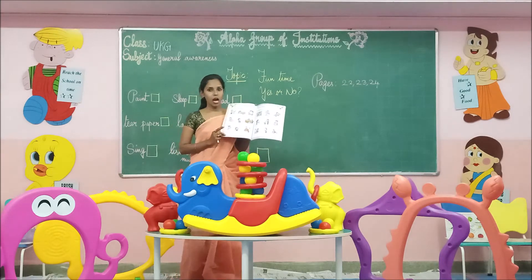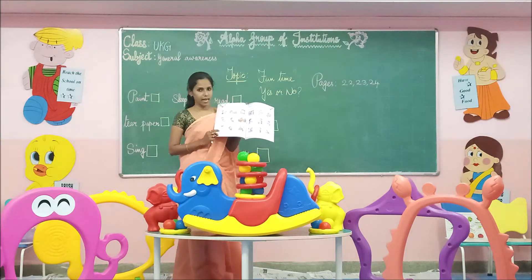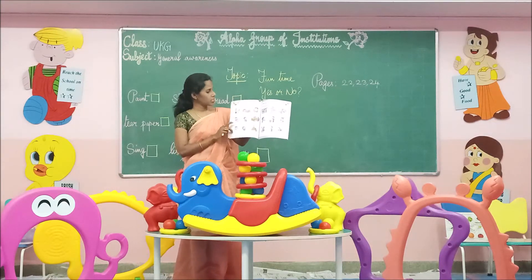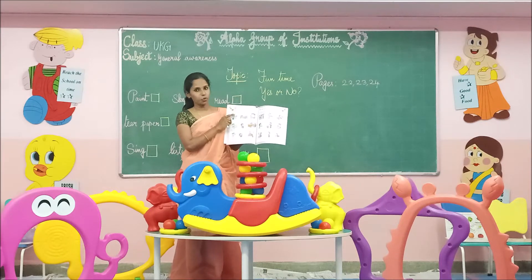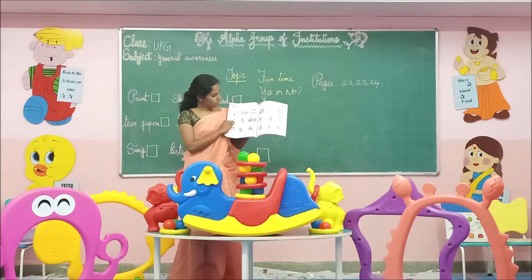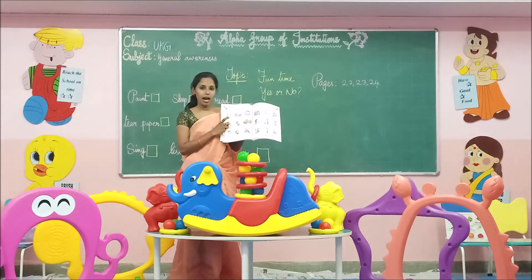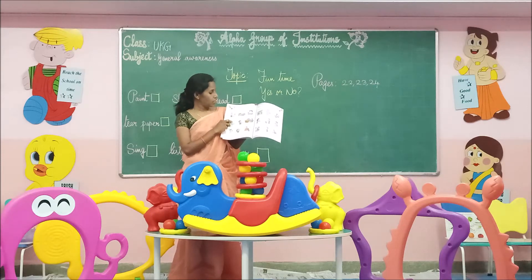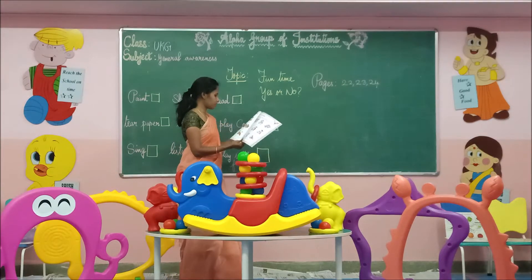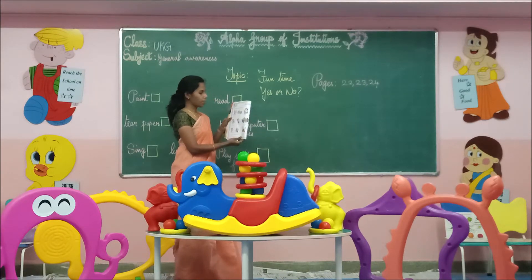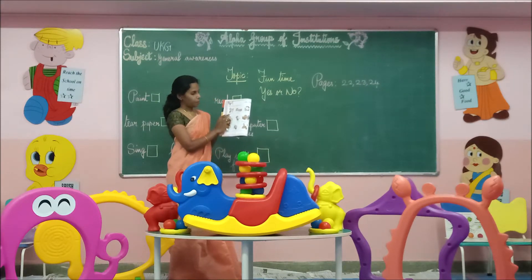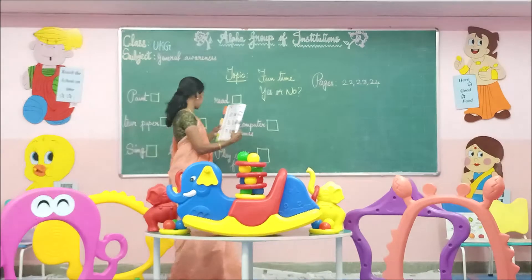Now I am going to explain you how to do this activity. See children, take the thing that you like to do. So many activities are given here in this page. What you have to do? You have to read them one by one and see whether you can do this activity you like to do or not. So many activities are here — 3 by 3 activities.